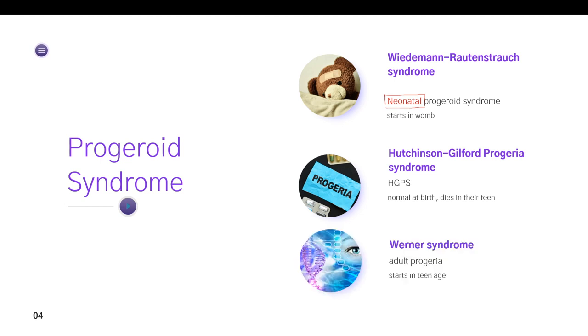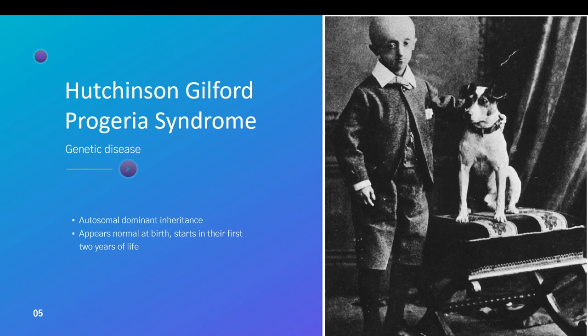The third disease is Werner syndrome. Werner syndrome is also referred to as adult progeroid syndrome. The age of onset is usually in their teen. Thus we can see that all these diseases differ in their age of onset. Now let us focus on Hutchinson-Gilford progeroid syndrome. If not meant otherwise, progeroid syndrome usually refers to Hutchinson-Gilford progeroid syndrome.